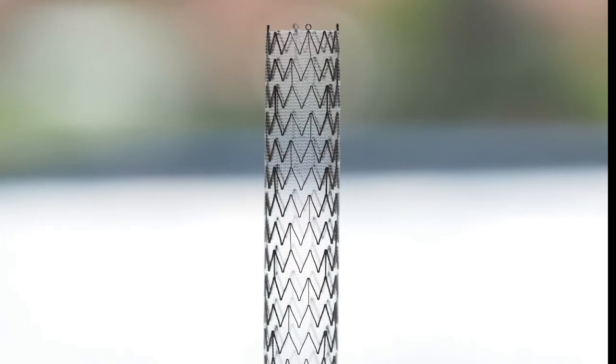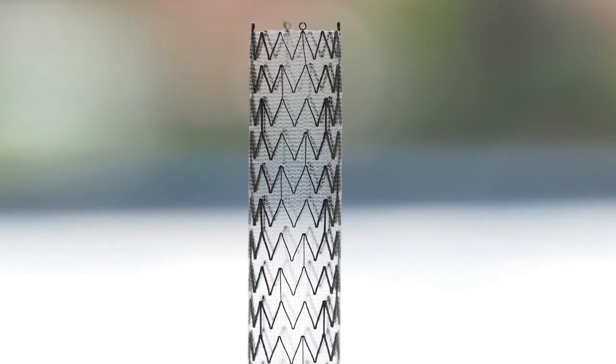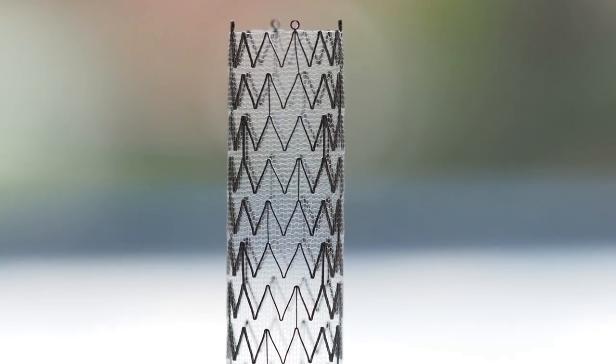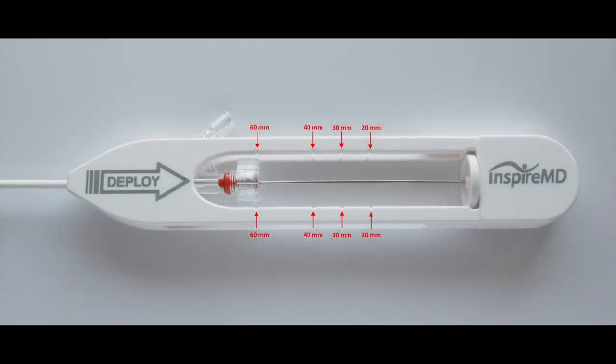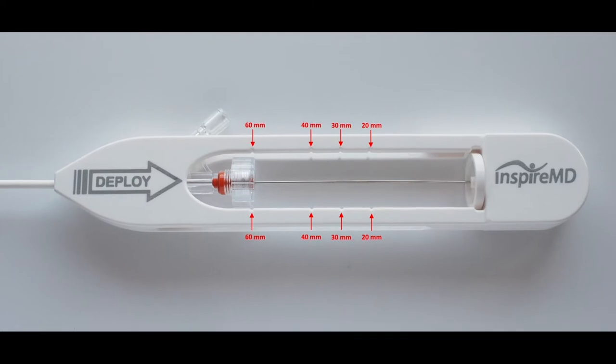As per the instruction for use manual, conduct the following steps to prepare the SeaGuard Embolic Prevention Stent System. Ensure that the hemostatic valve position matches the chosen stent size in accordance with the measurement marks on the handle.